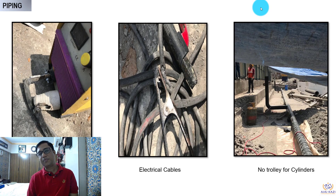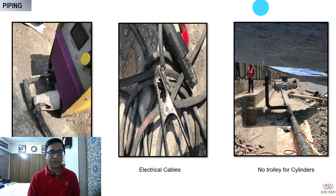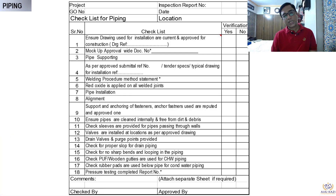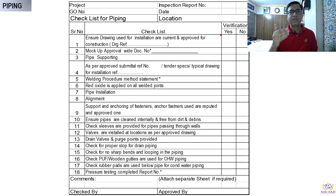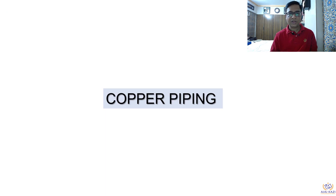We can see some common problems at site — the kind of welding machine, the cables, and the way oxygen cylinders and other cylinders are handled. A small checklist for piping covers most things: whether the drawing is available, whether the markup is approved, whether the specs are followed, and whether the best practices are followed. Everything is mentioned in this checklist, and it should be checked when piping work is done.